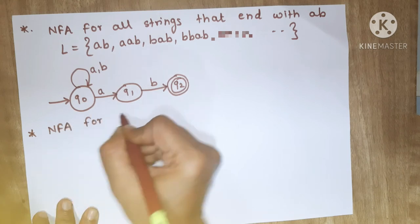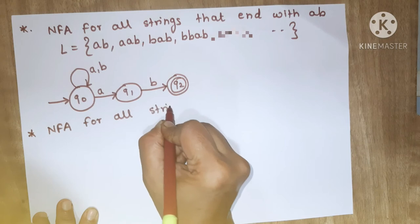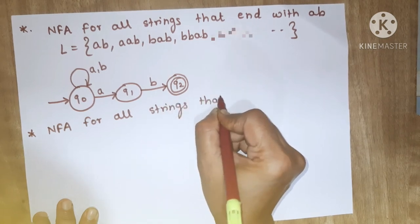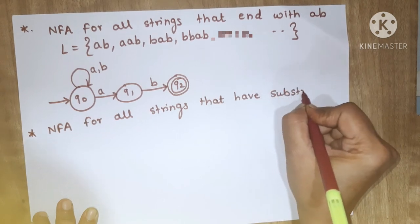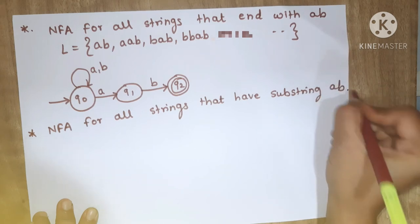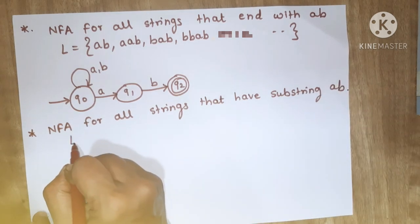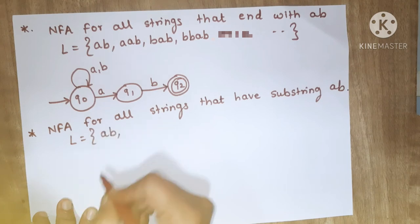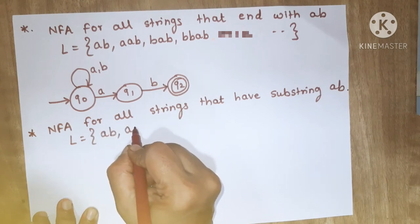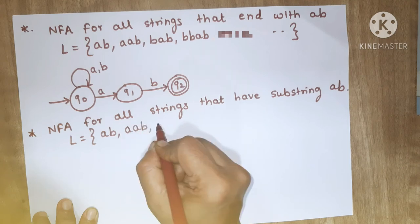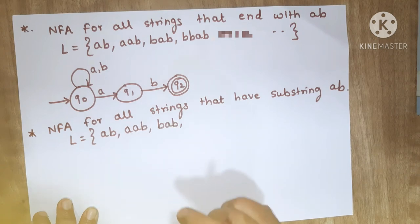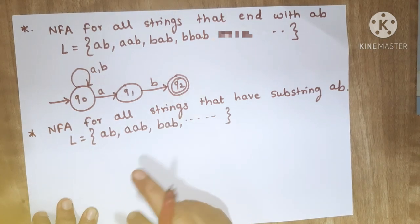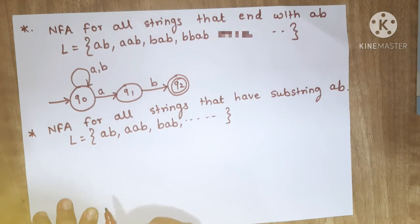Now suppose I want to draw NFA for all strings that have AB as a sub-string. Here the language L will contain AB, it will contain AAB or BAB. The only requirement is that every string should have AB as a sub-string. Before that AB you can have anything, or after the AB you can have anything.